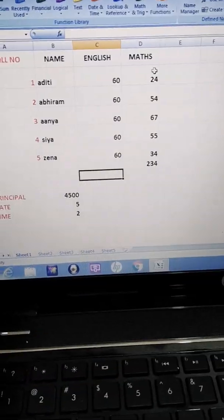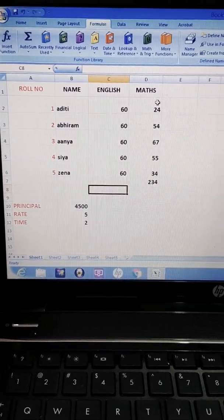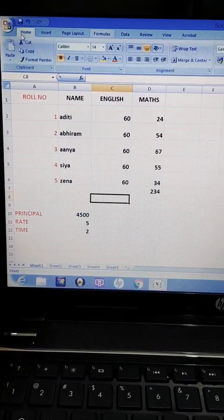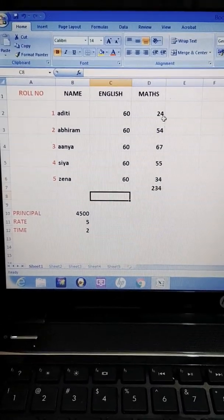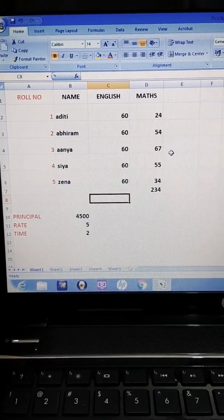Spreadsheet you have done in seventh standard and in sixth also. What is spreadsheet? Microsoft Excel software. I have already opened one Excel sheet and I have entered roll numbers of five students, names, their English marks, and their maths marks. You can see from here.